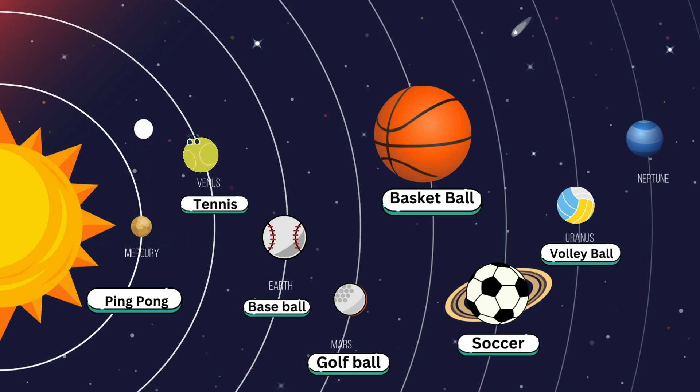Number 7: Uranus can be a volleyball. And finally, number 8: Neptune can be compared to the size of a handball.